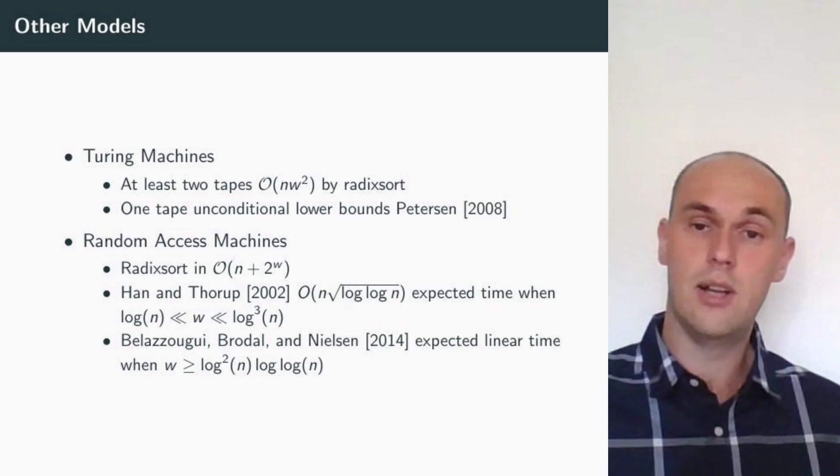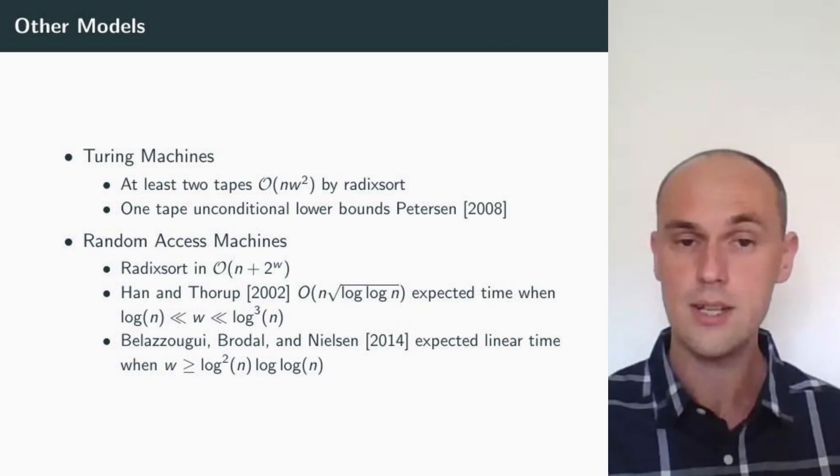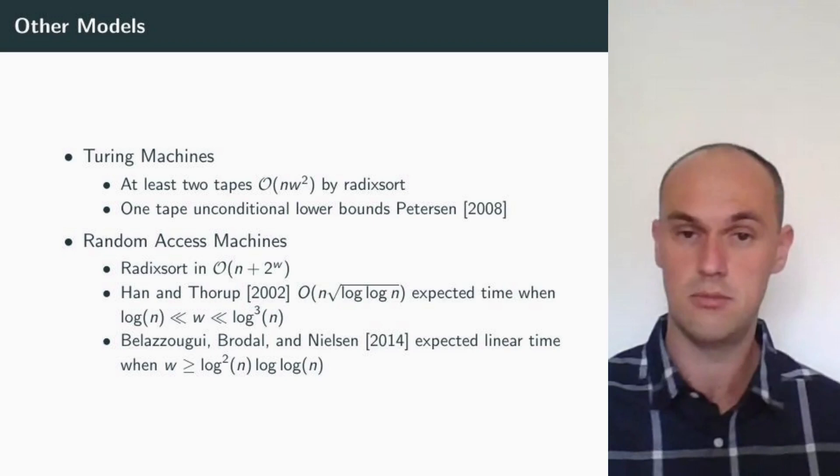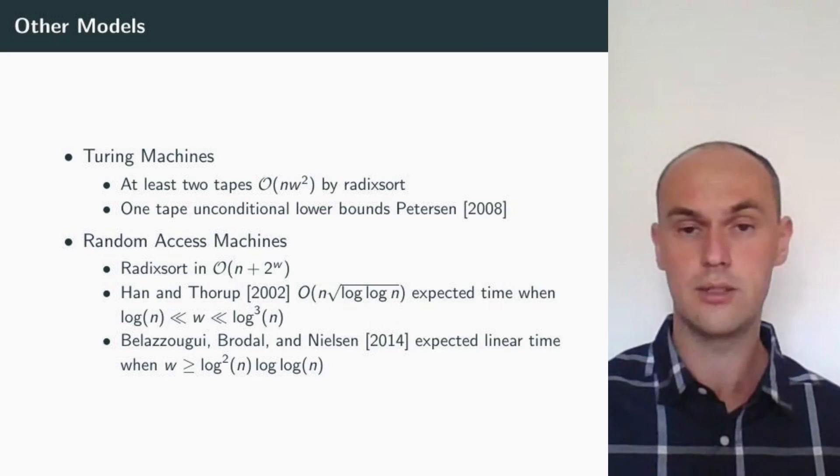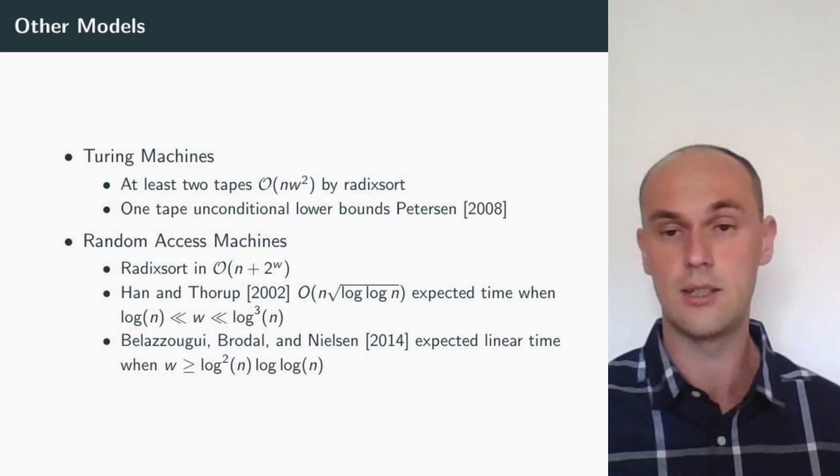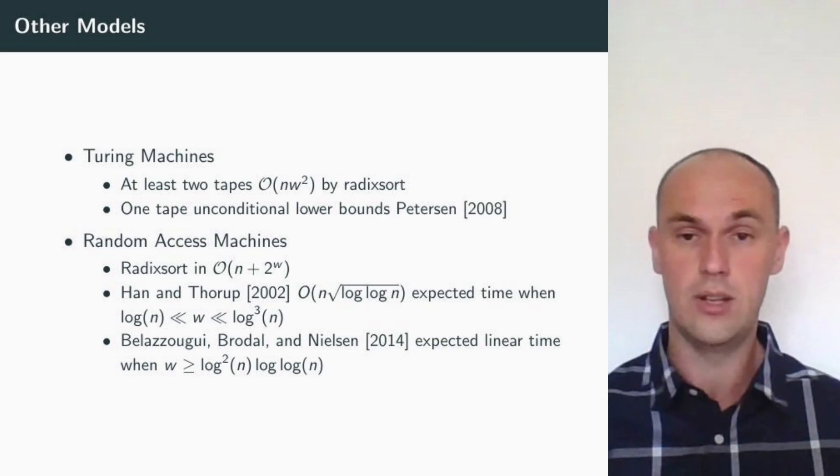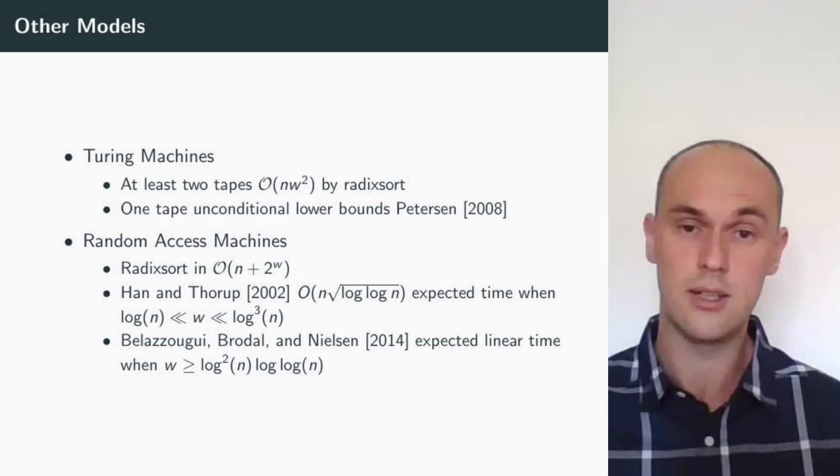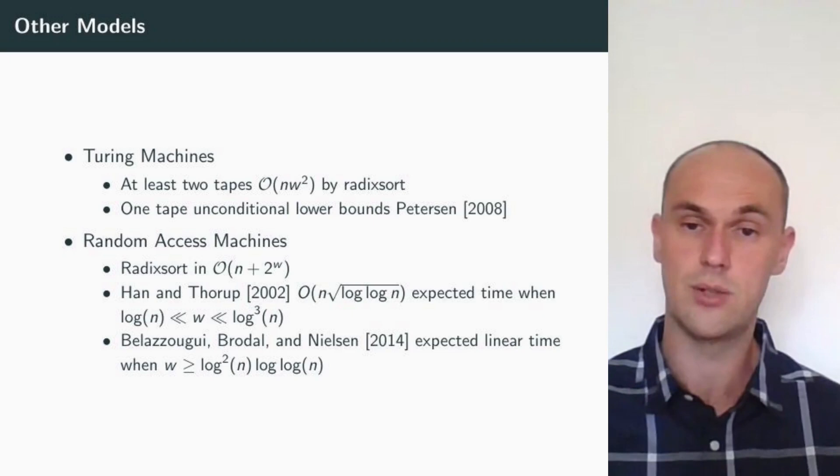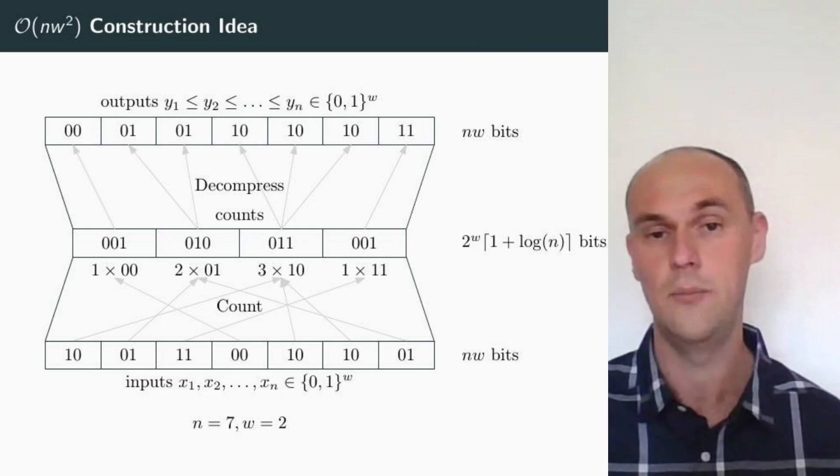The harder, it seems that the hardest setting is when w is between log n and log n squared, roughly, or log n cubed, where Han and Thorup gave their famous n square root of log log n expected time algorithm. When w is large, and here large we mean w is at least log squared n times log log n, Belazzougui, Brodal and Nielsen in 2014 gave expected linear time algorithm.